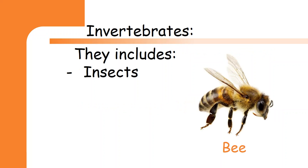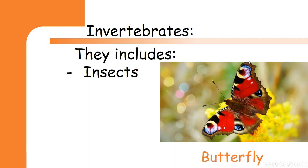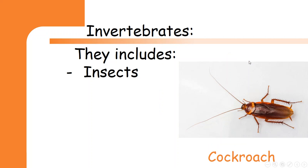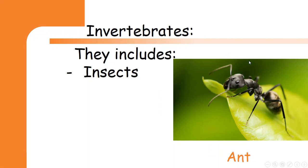Invertebrates are divided into three groups. The first group is the group of insects. The group of insects includes animals like the bee, butterfly, cockroach, and the ant. These animals are called insects.